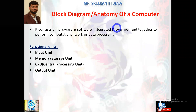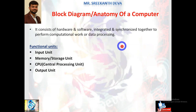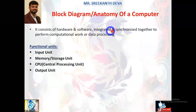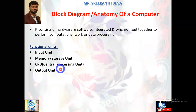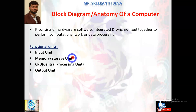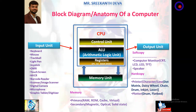Today we discuss in detail the block diagram or anatomy of a computer. In the previous video session I explained about computer architectures — von Neumann architecture and Harvard architecture. The block diagram of a computer consists of hardware and software integrated and synchronized together to perform computational work or data processing operations. The major functional units are: input unit, memory or storage unit, CPU (central processing unit), and output unit.